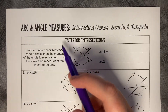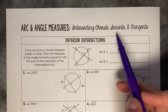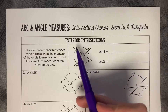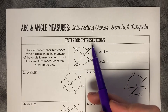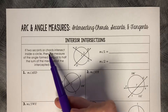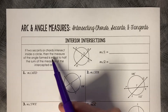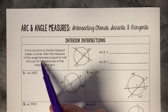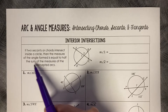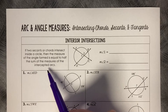Arc and angle measures: intersecting chords, secants, and tangents. Interior intersections: if two secants or chords intersect inside of a circle, then the measure of the angle formed is equal to half the sum of the measures of the intercepted arcs.